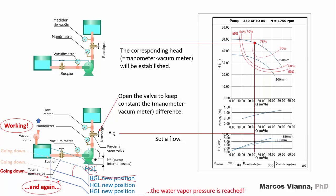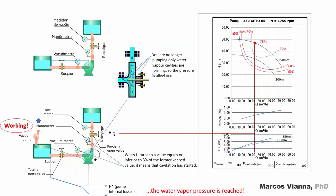Let's do the same again until the water vapor pressure is reached. How do I know it's been reached? It's simple. When the manometer vacuum meter difference turns to a value which is equal or inferior to 3% of the value that we were keeping, it means that cavitation has started.